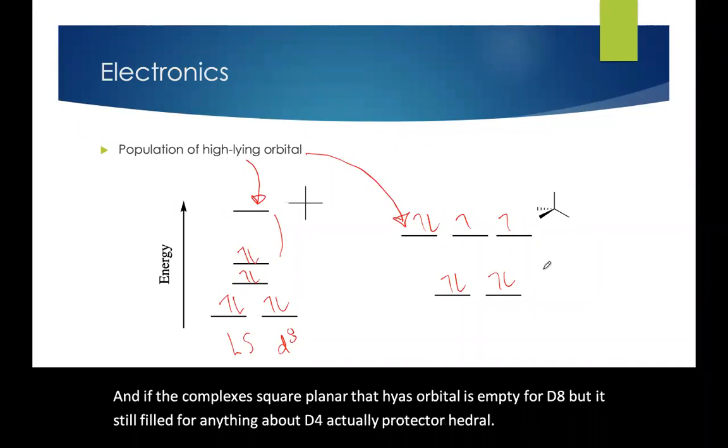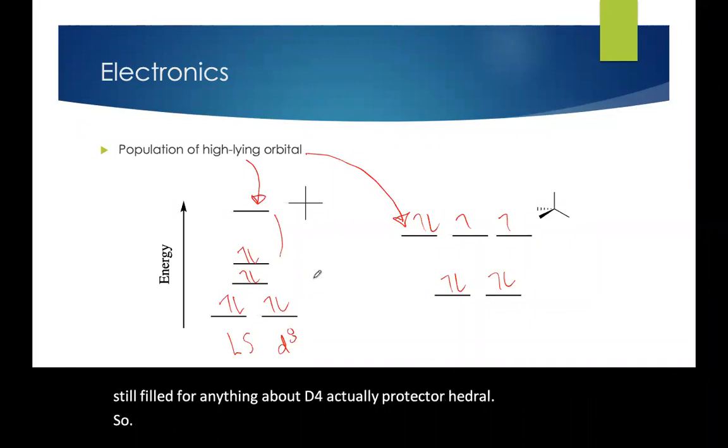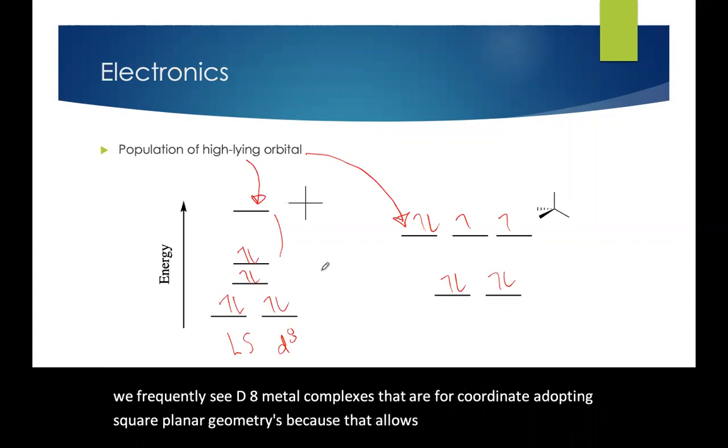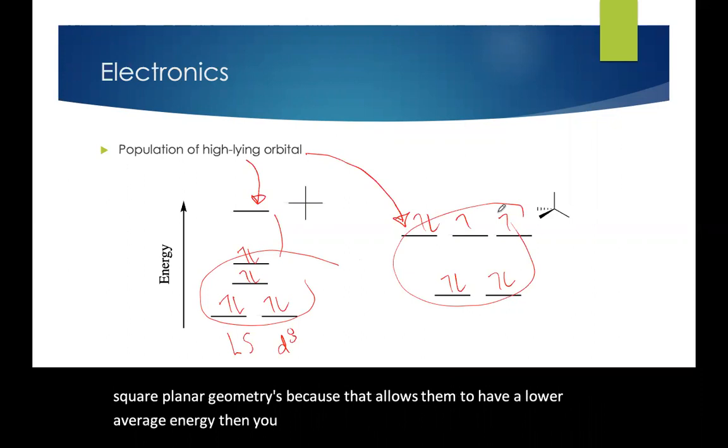So we frequently see d8 metal complexes that are four coordinate adopting square planar geometries because that allows them to have a lower average energy than you get in the corresponding tetrahedral complex.